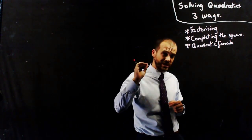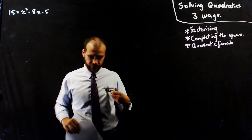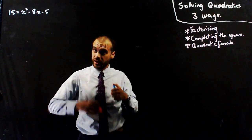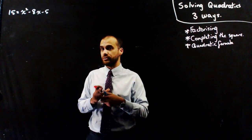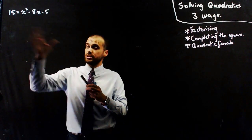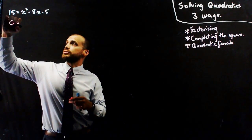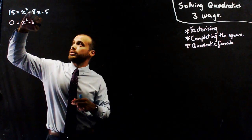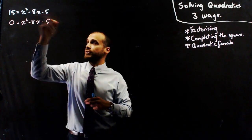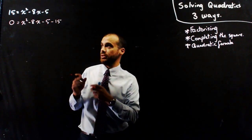We're going to solve the same question three different ways. Here's my question: 15 equals x squared minus 8x minus 5, and I'm going to solve this first by factorising. Now if you want to solve a quadratic by factorising, you need to make sure first it's equal to 0. So 0 is equal to x squared minus 8x minus 5, and then that 15 comes over as a negative 15.